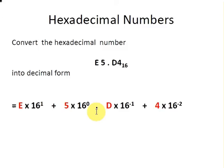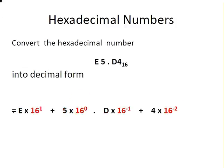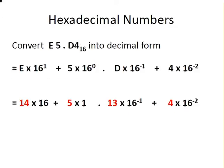What we have to do is simplify all of these expressions. We're going to get the decimal equivalence of each of these four characters. E is 14, 5 is simply 5, D is 13, and 4 is simply 4.